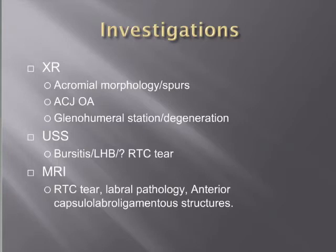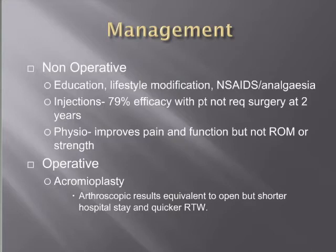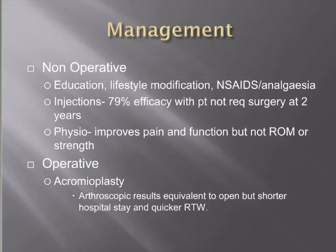The vast majority are managed non-operatively with education, lifestyle modifications, anti-inflammatories, and analgesia. Injections have a 79% improvement rate with patients not requiring surgery at two years. Physiotherapy tends to improve pain and function but does not significantly improve range of motion or strength. For surgical management, acromioplasty can be used in patients non-responsive to non-operative management. Open versus arthroscopic acromioplasty have equal outcomes regarding function and pain, but arthroscopic results in a shorter hospital stay and quicker return.